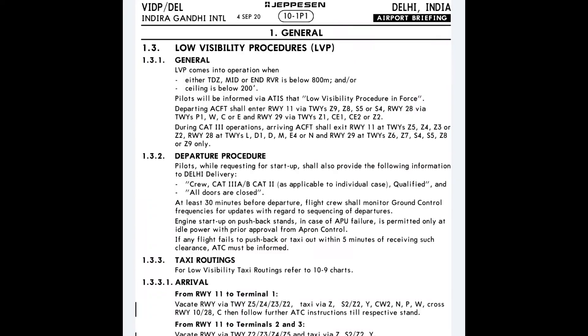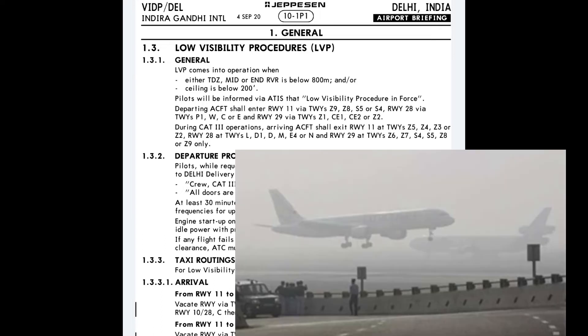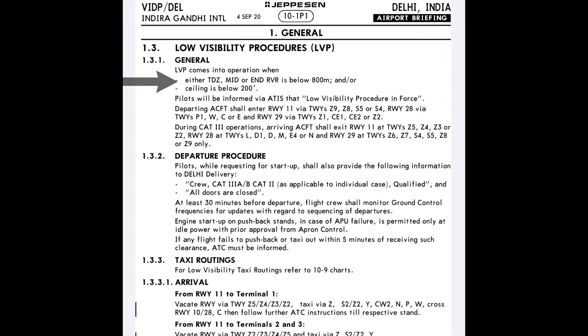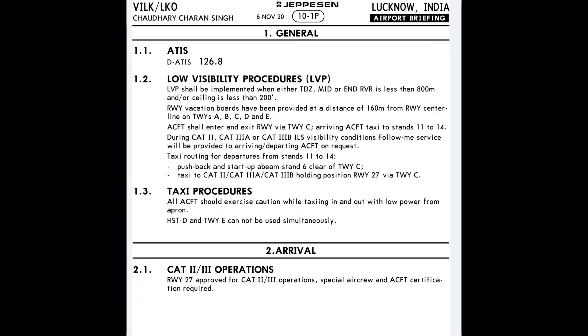The point at which LVP is implemented varies from airport to airport. The information about applicability of LVP can be checked from the 10-1 Papa pages of the respective Jeppesen approach plates of the related airport. For example, at Delhi, the LVP procedure is implemented when either the touchdown zone, midpoint, mid-zone, or end-zone RVR is below 800 meters and ceiling is below 200 feet.